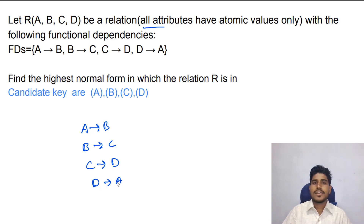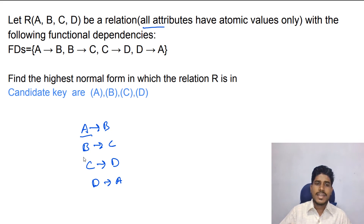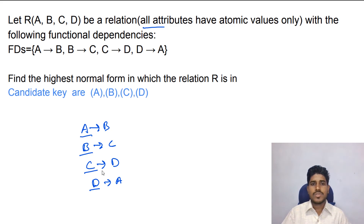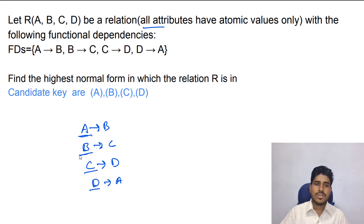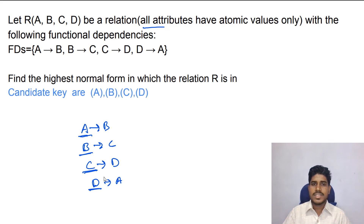Now we check BCNF. A is a super key, B is also a super key, C is also a super key, and D is also a super key. So this relation is in BCNF. Thank you everyone for watching this tutorial.